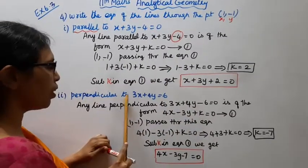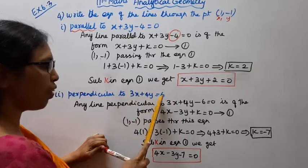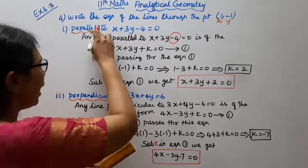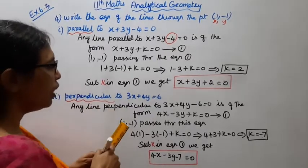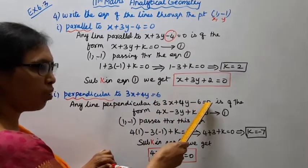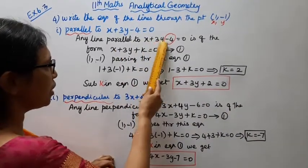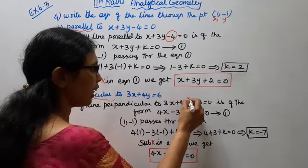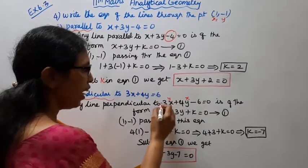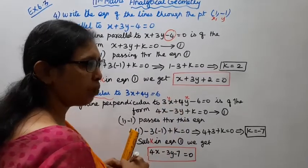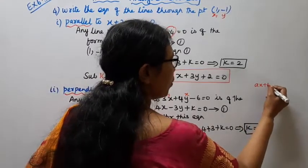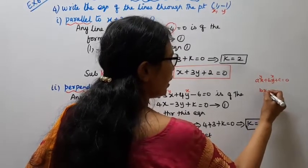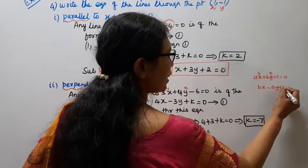Second subdivision: perpendicular to 3x + 4y = 6, which we write as 3x + 4y - 6 = 0. For any line AX + BY + C = 0, a perpendicular line has the form BX - AY + K = 0.